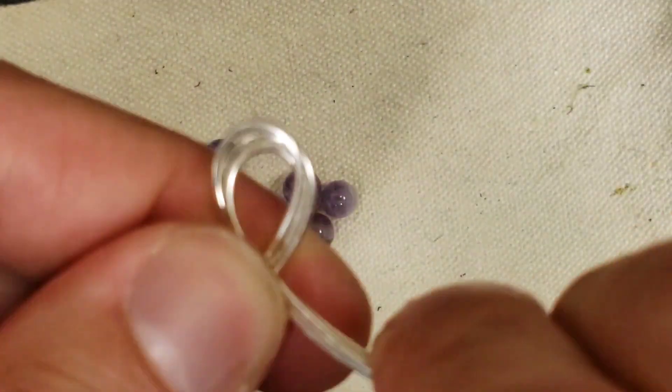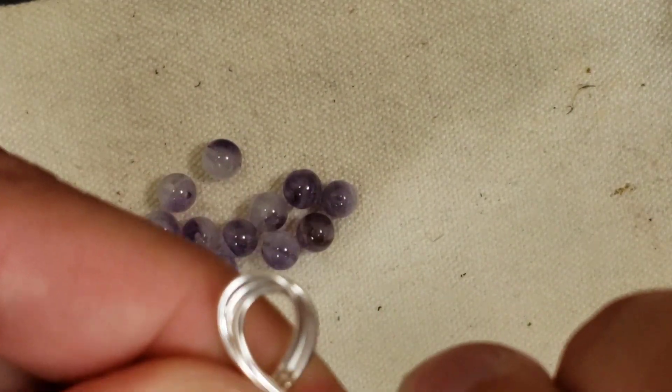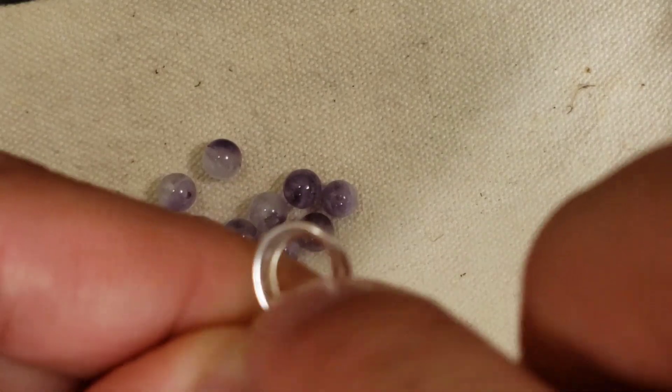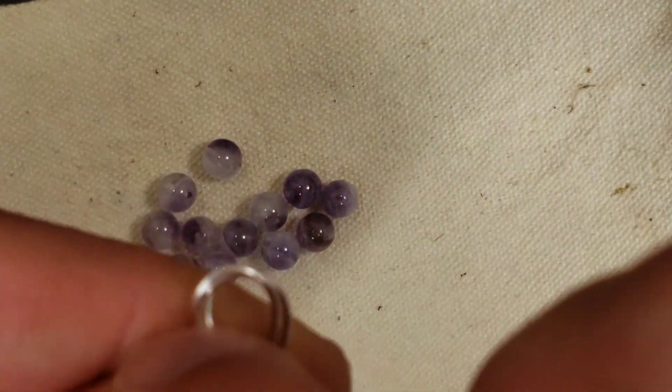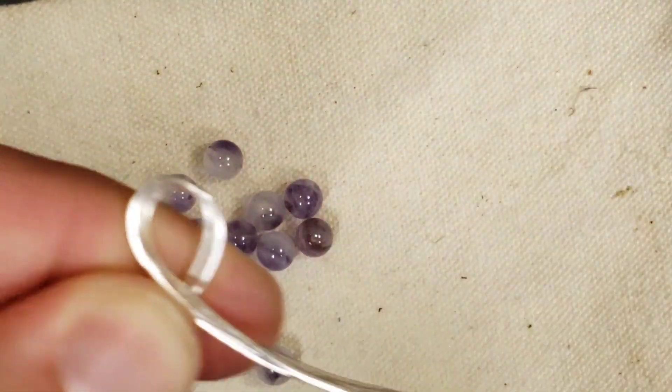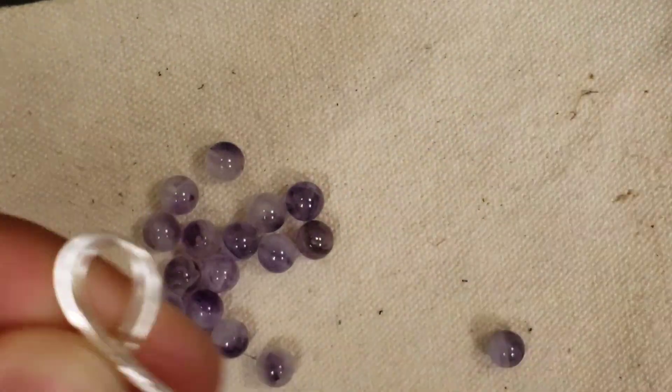Doesn't have to be wonderful or perfect, just basically a loop about 8mm to 10mm across, or about half an inch across. Big enough that you can put one of your little 6mm beads in there and it just floats on top. And then give it a twist, and one more twist.